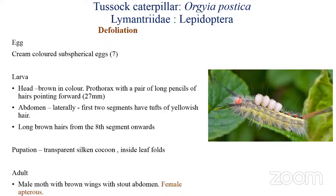The males of this pest are known to attract to females during dusk. After mating, the female lays cream-colored sub-spherical eggs in a mass on the cocoon itself. The larvae hatch from the eggs in seven days. The larval period is around 16 days in males and 19 days in females. The fully grown larva has a brown head, and the prothorax has a pair of long pencils of hairs projecting forward. The larvae are about 27 mm long.